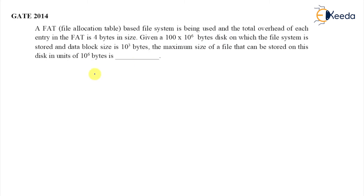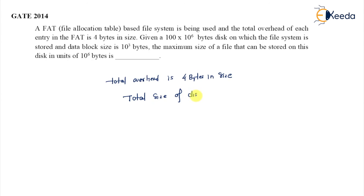Now, a File Allocation Table (FAT) based file system is being used, and the total overhead of each entry is 4 bytes in size. The total size of the disk is 100 × 10^6 bytes and the disk block size is 10^3 bytes. The question asks for the maximum size of a file that can be stored on this disk.